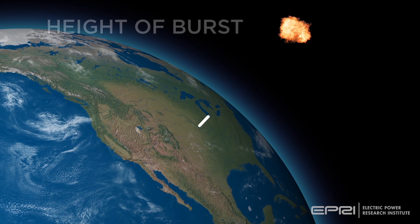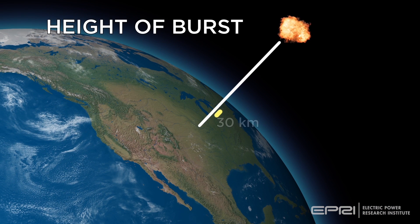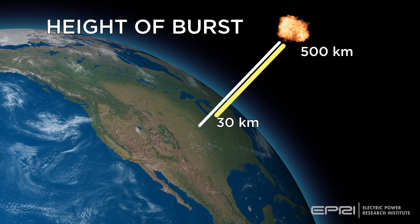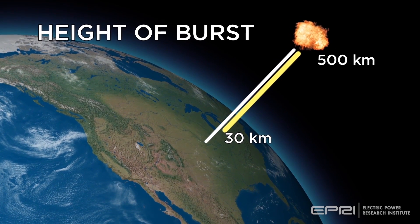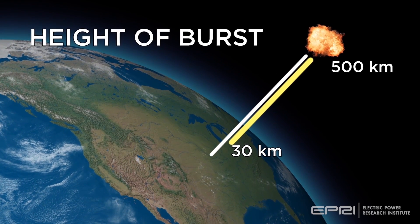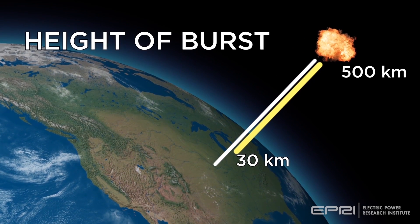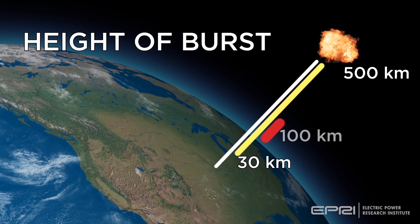The so-called height of burst can range from 30 kilometers to 500 kilometers or higher. However, in order to generate significant weapon effects from all three components, E-1, E-2, and E-3, the height of burst is typically 100 kilometers or higher above the Earth's surface.